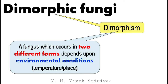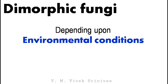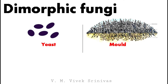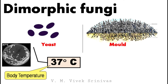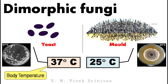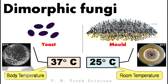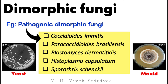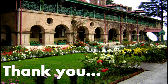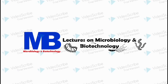Dimorphic fungi: the term 'dimorphism' describes a fungus that occurs in two different forms depending on environmental conditions like temperature. At 37°C (body temperature) it grows as yeast, and at 25°C (room temperature) it grows as mold. Examples of pathogenic dimorphic fungi are Coccidioides immitis, Paracoccidioides brasiliensis, Blastomyces dermatitidis, Histoplasma capsulatum, and Sporothrix schenckii. This concludes part one of the lecture on introduction and classification of fungus. Part two will cover fungal reproduction and cultivation.